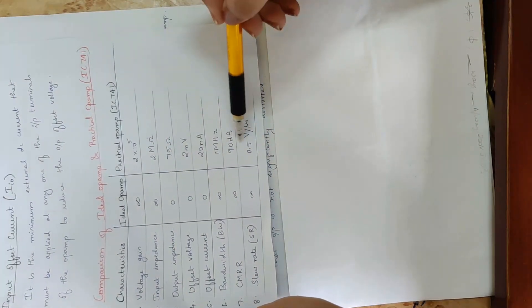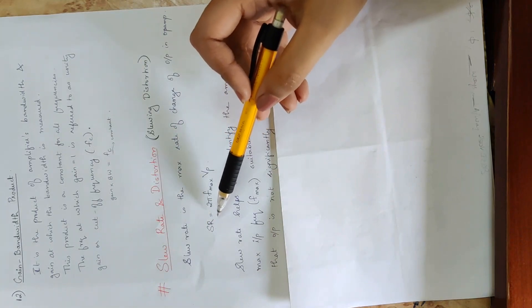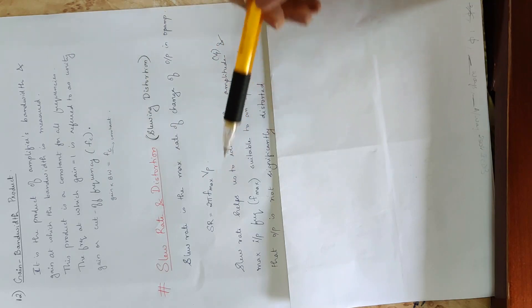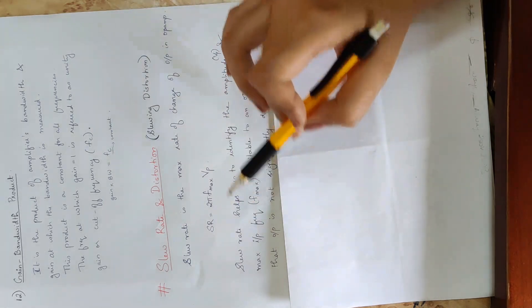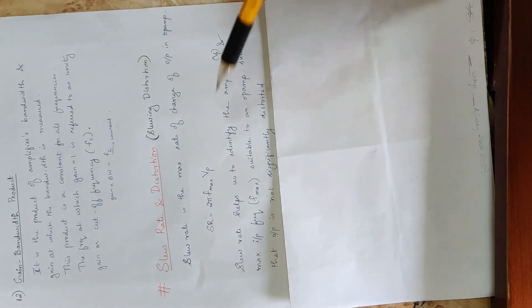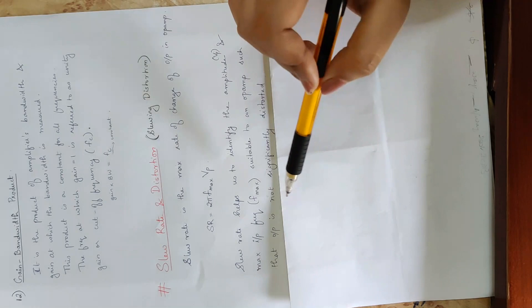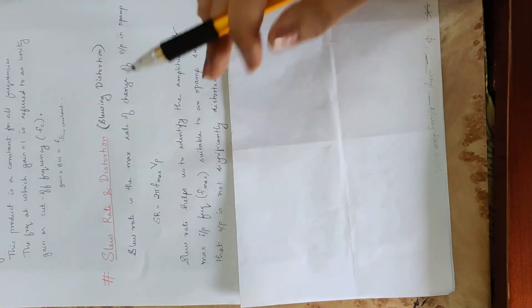The slew rate for IC741 is 0.5V per microsecond. This value helps us to identify the maximum frequency and amplitude at this voltage, so that the output is not significantly distorted for a given opamp.